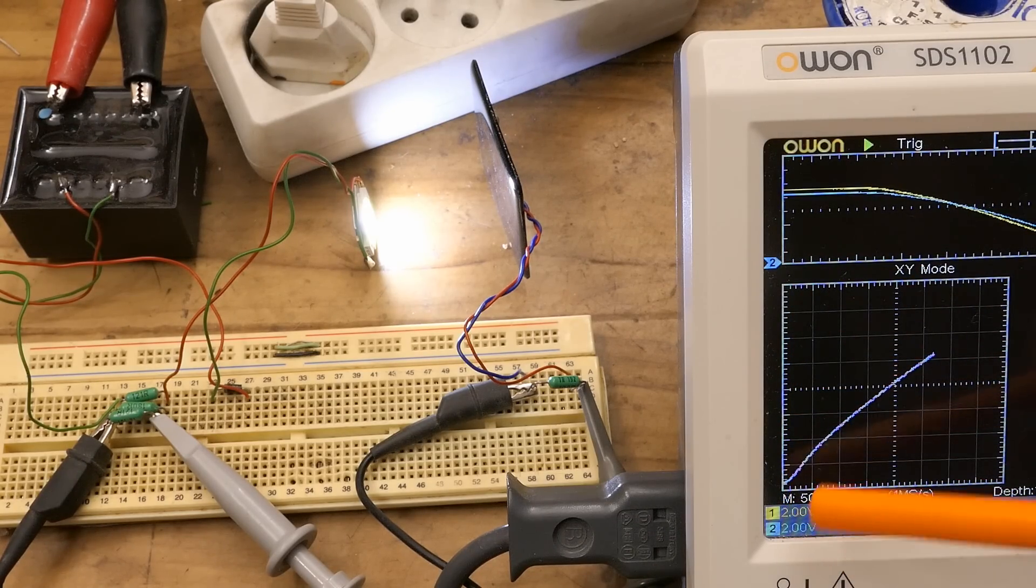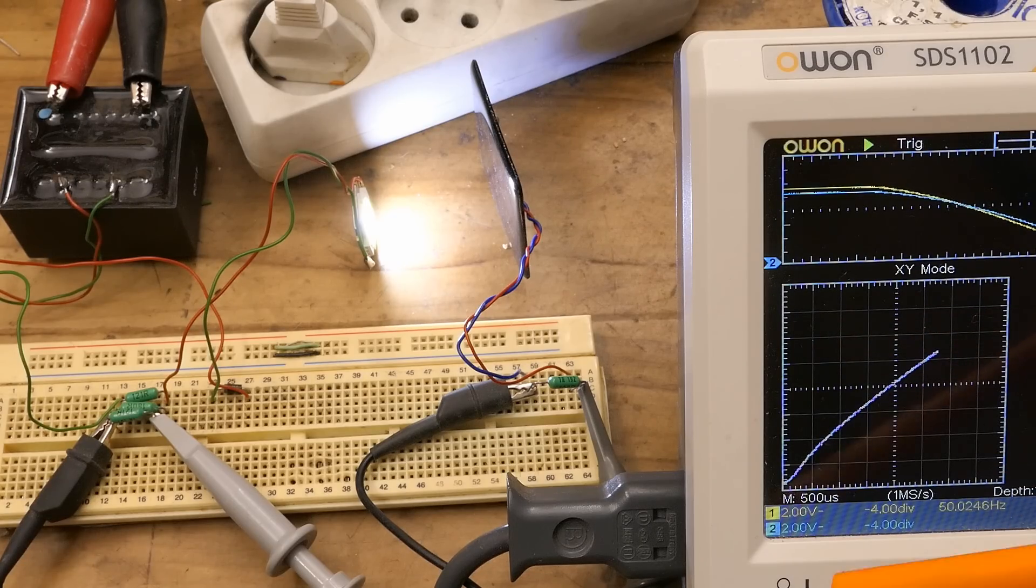It seems to be almost linear. Maybe the efficiency of the panel goes slightly down at a higher illumination, but this could also be the LED. I guess it's actually the LED because the efficiency of LEDs goes down a bit at higher currents.